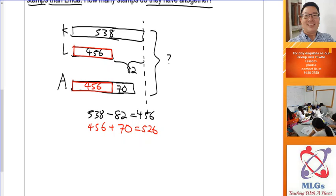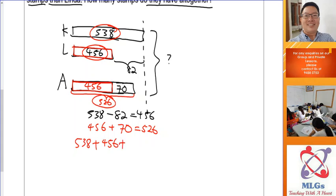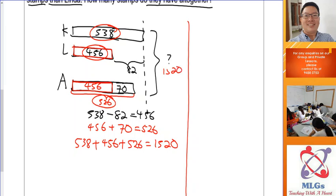Whatever answers you find, add them to your model by drawing an arrow sign. So Katie has 538, Linda has 456, and Andy has 526. Now we can find the total: 538 plus 456 plus 526 — we won't show all the working here, but adding all three numbers together gives 1,520 stamps altogether.